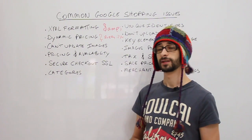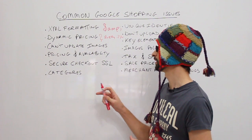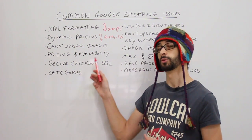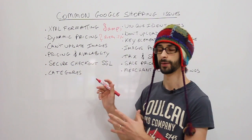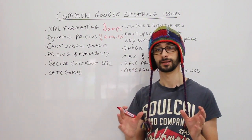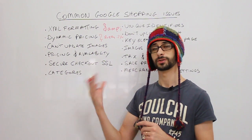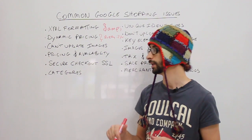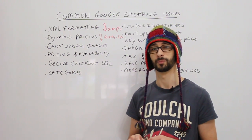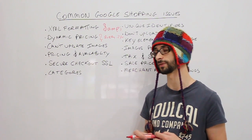Pricing and availability needs to be exactly the same as on your website. The price in your data feed — for example £2 or $2 — must match the price on your website exactly. If that is not done, your product can end up in an exclusion and Google will simply not show it in their shopping feed.